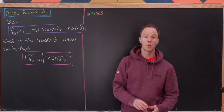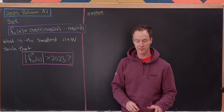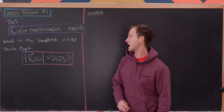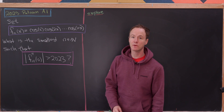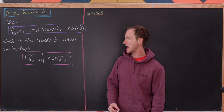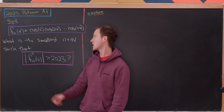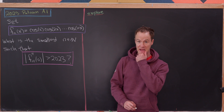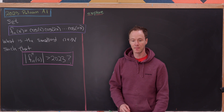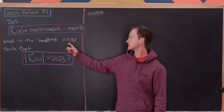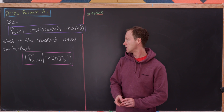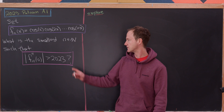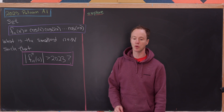Today we're going to look at a nice problem from the 2023 Putnam exam, problem A1. We want to define the following sequence of functions, denoted f sub n, which is the product of cosine of x times cosine of 2x, all the way up to cosine of n times x. Our goal is to determine the smallest natural number n where if we take the second derivative of f sub n, evaluate it at zero, and take the absolute value, we get something larger than 2023.